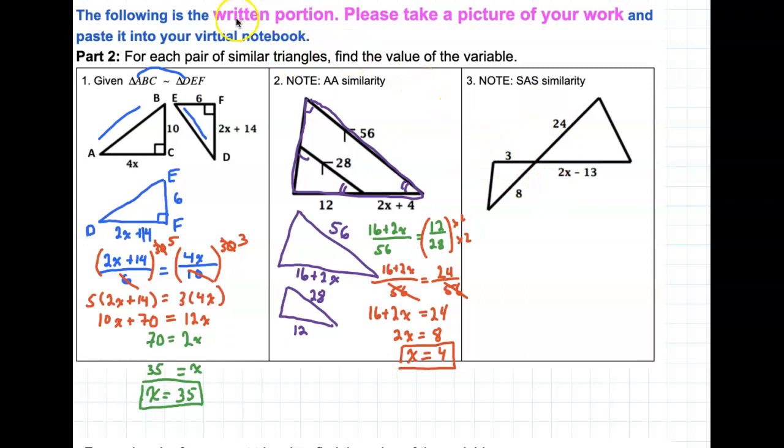These ones are a little bit tricky, because if we look at the proportions. So first of all, this 2X minus 13, if we look at the ratio between that and the, so for example, 2X minus 13 to 3, that is equal to 24 to 8.